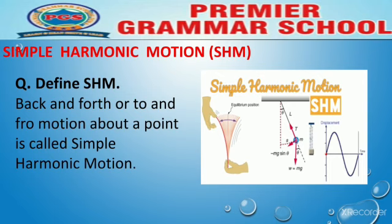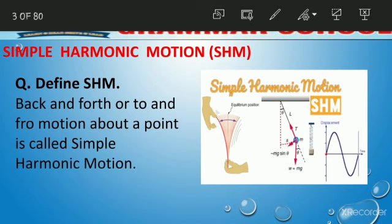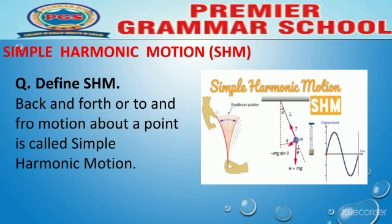To and fro motion بھی یہی ہوتی ہے۔ مثال کے طور پر simple pendulum کی مثال آتی ہے — ایک پتھر لے کر اسے ڈوری کے ساتھ باندھیں، اور اسے کسی fixed point سے لٹکا کر ایک بار external force دیں۔ پھر وہ اپنی mean position کے ارد گرد فارورڈ اور بیک ورڈ motion کرتا رہے گا۔